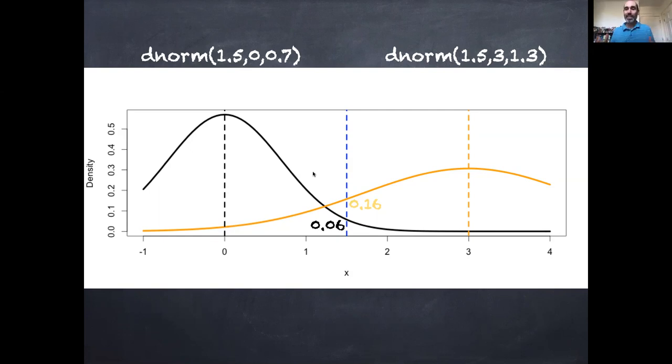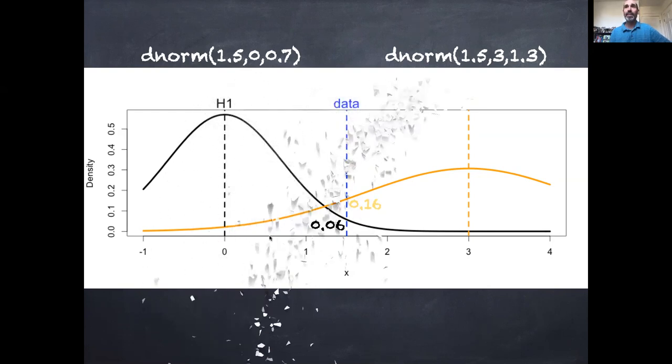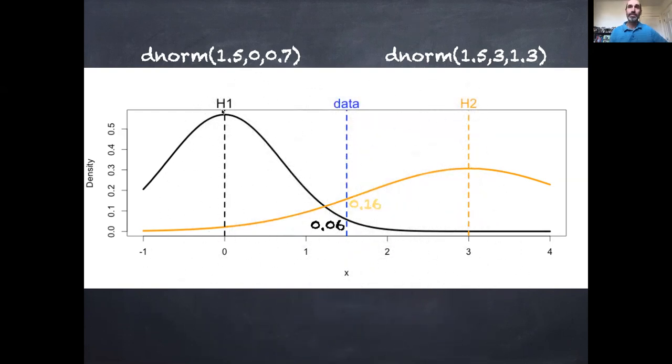Now this is setting us up for the idea of how we're going to link models and data. So instead of these just being arbitrary distributions, imagine that instead these two distributions represented two alternative hypotheses. Hypothesis one, that the mean is zero and standard deviation is 0.7. Hypothesis two, predicted a mean of three and a standard deviation of 1.3. So we have these two different models, they make two different predictions, and we observe a data point at 1.5.